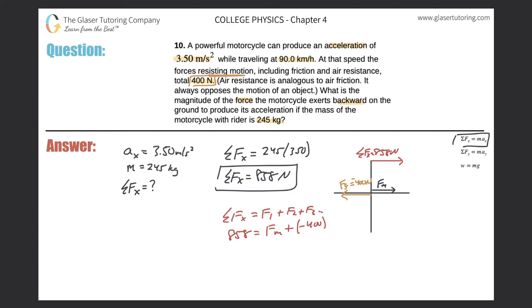So now how do I solve this? This is a negative, obviously. So just add the 400 on over and this should make intuitive sense. So the force of the motorcycle is 858 plus 400, which is 1258. So it's 1258. But let's round a little bit for sig figs. So it's really 1260 newtons.